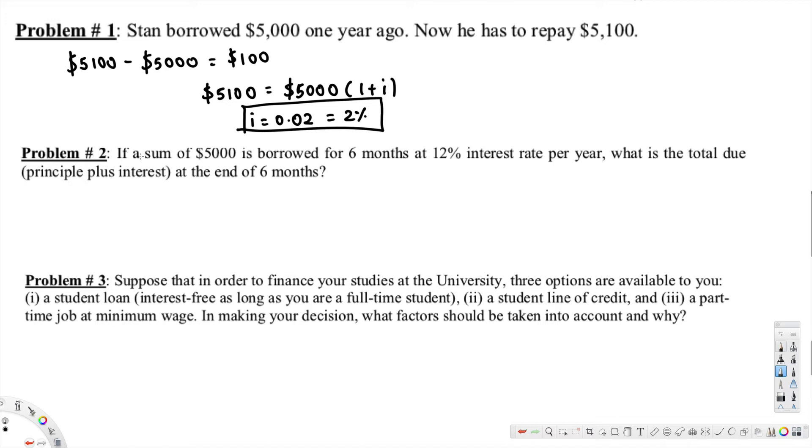And then problem number two asks: if a sum of $5000 is borrowed for six months at 12% interest rate per year, what is the total due at the end of six months?